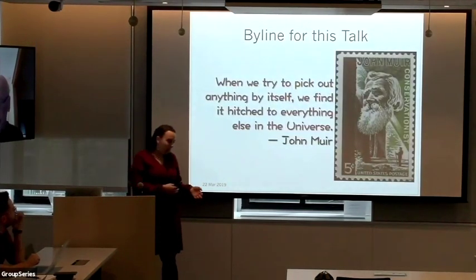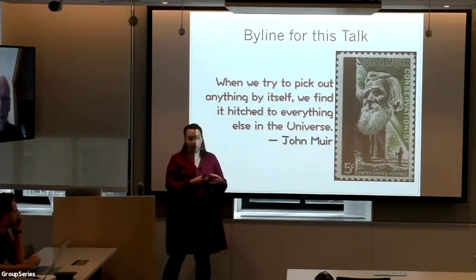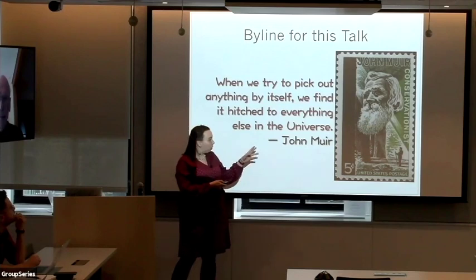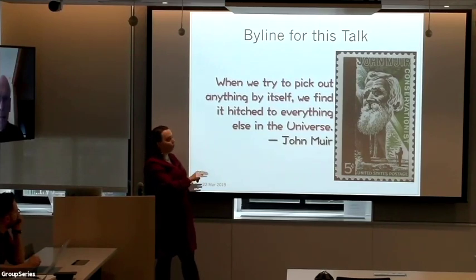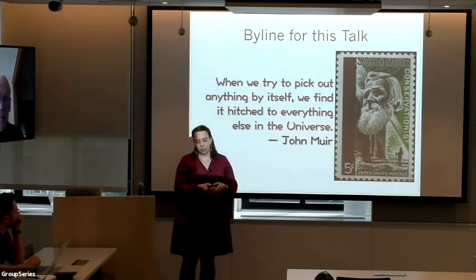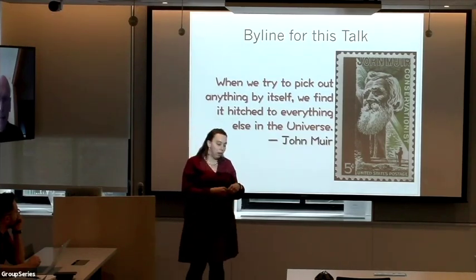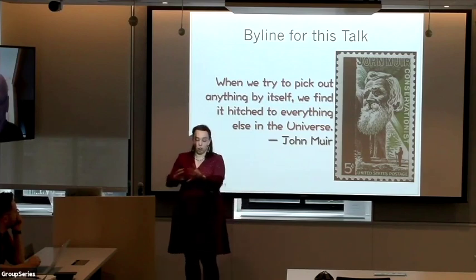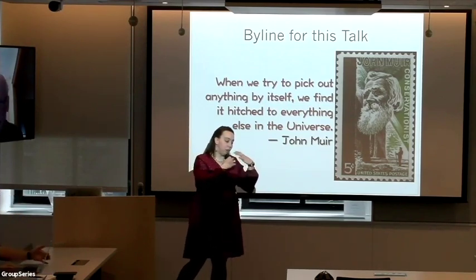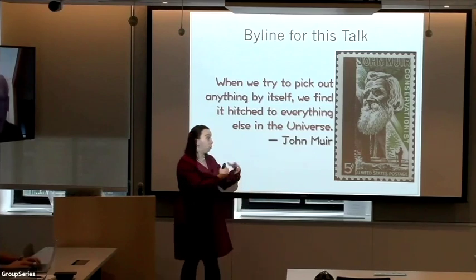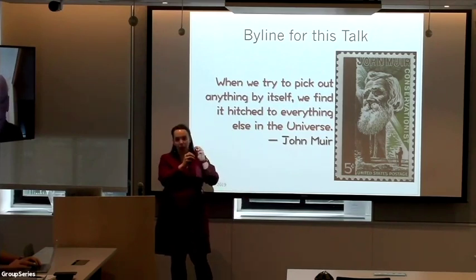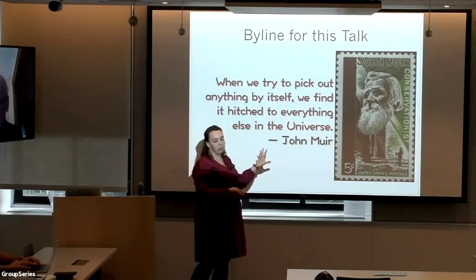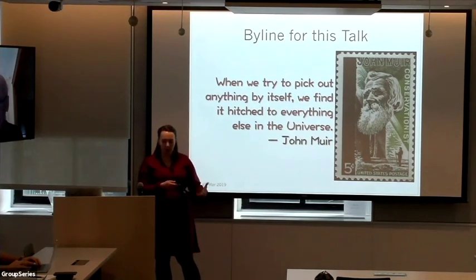The byline for this talk—really about any talk about measuring the Hubble constant from the distance scale—can be summarized by this quote by John Muir, a conservationist who founded the Sierra Club. He said: 'When we try to pick out anything by itself, we find it hitched to everything else in the universe.' When we measure the Hubble constant, we have to care about cosmology, stars, galaxy structure, supernova explosion mechanisms, and the gas in those galaxies. Basically every bit of astrophysics goes into this measurement.